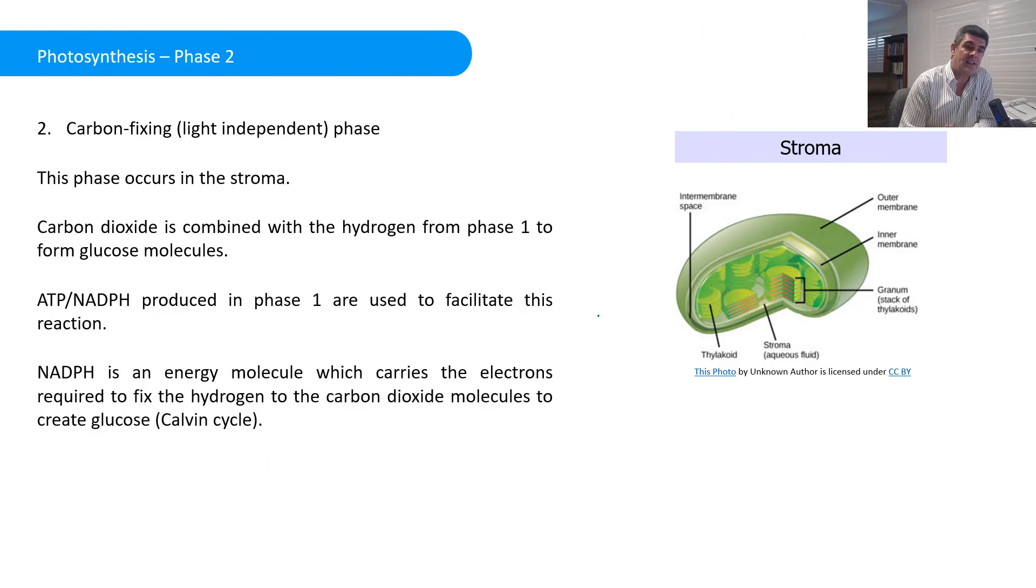So the second phase is a light-independent phase. It doesn't need light. It can occur during the daytime, but it doesn't need light for this phase to be undertaken. This occurs in the stroma. This is the stage where the hydrogen that's come from the water molecule, so the breakdown of the water molecule's released oxygen, and the hydrogen is being transported through into the stroma.